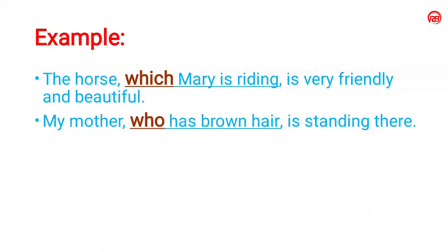The second example: my mother who has brown hair is standing there. 'Who' is the relative pronoun, and 'who has brown hair' is the relative clause, which gives some additional information about the noun.